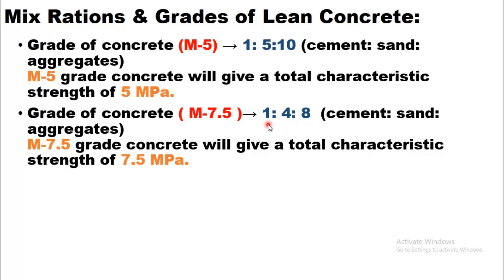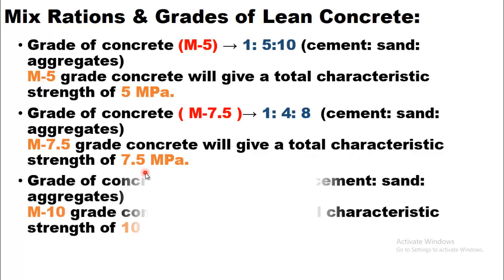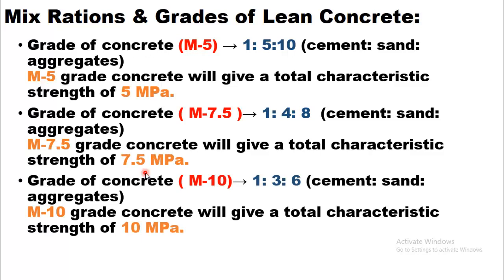M7.5 grade concrete gives a characteristic strength of 7.5 MPa. The third mix ratio and grade used for lean concrete is M10, with a ratio of 1:3:6 — 1 part cement, 3 parts sand, and 6 parts aggregate. Looking at these ratios, the amount of coarse and fine aggregate is much higher compared to cement content, which is why it is called lean concrete. Greater the amount of cement, the richer the concrete; lesser the amount of cement, the leaner the concrete. M10 grade gives a strength of 10 MPa.